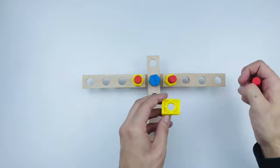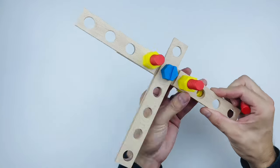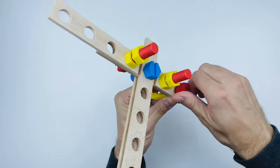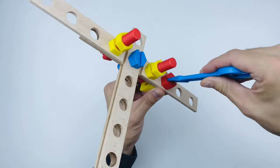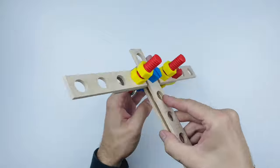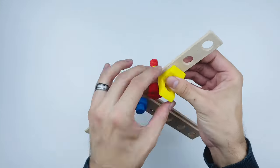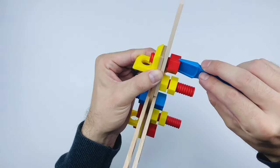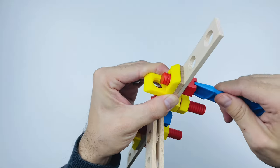Now we'll take a yellow bracket and fasten it with a red bolt. Let's use the screwdriver tip to tighten this. Righty tighty, lefty loosey.